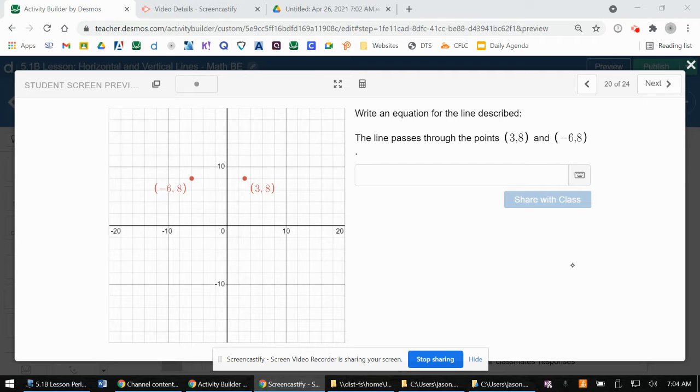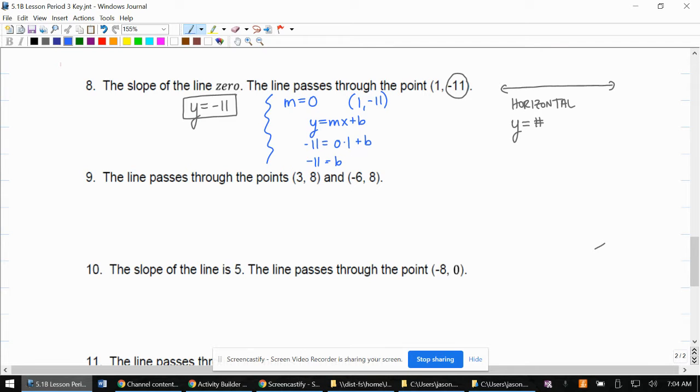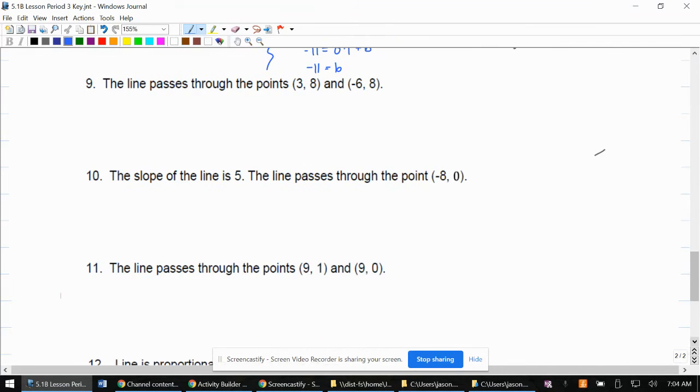Sketching a picture or looking at the provided picture, we can see that this is a horizontal line. In order to make it go through those points, it is going to be horizontal. This is number 9 in our module.